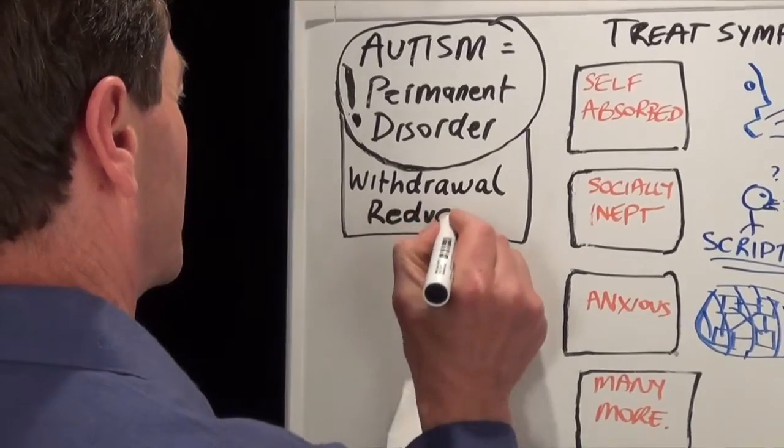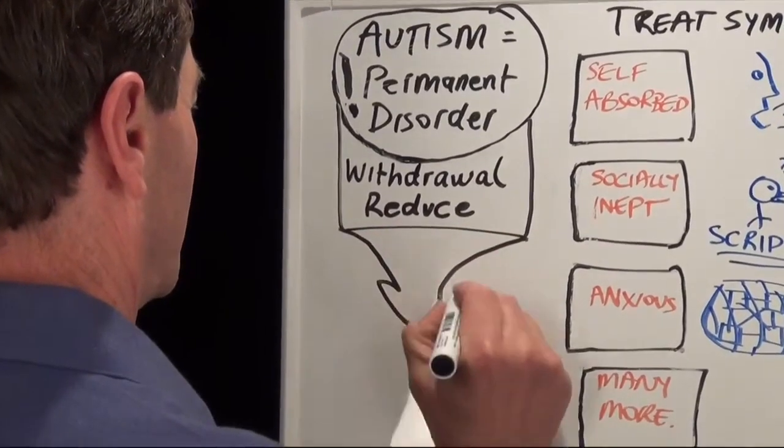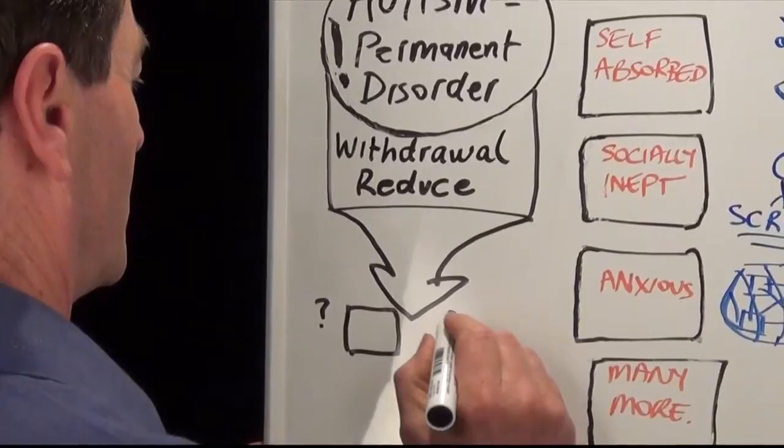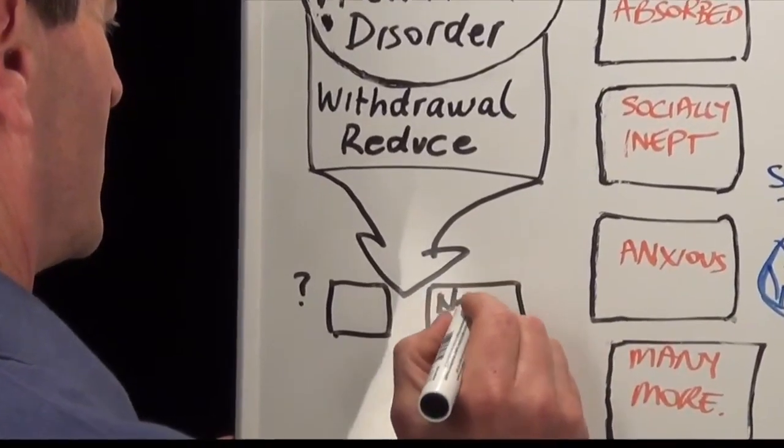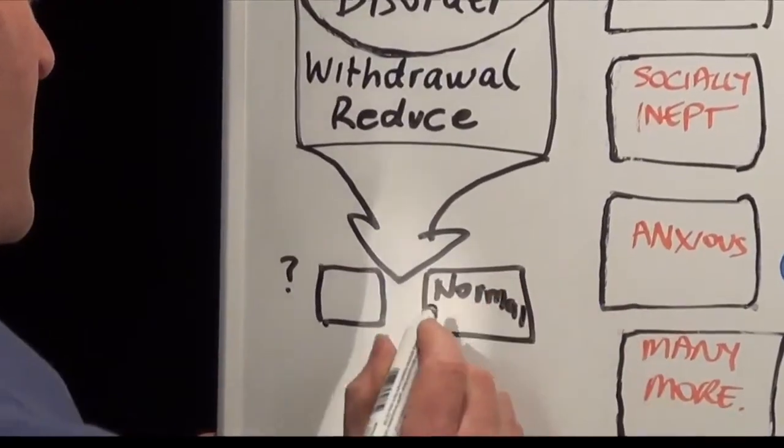So if we can reduce withdrawal, by how much can we reduce it? How far down can we go? Down to this level. And what's that level? It's the level of withdrawal that most of the population experience, or at least very close to that level.